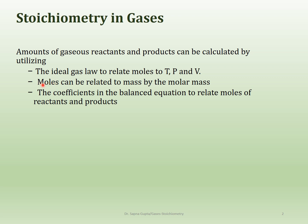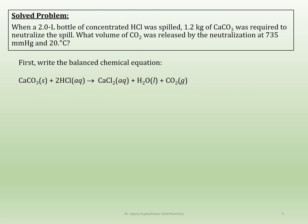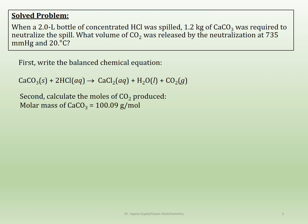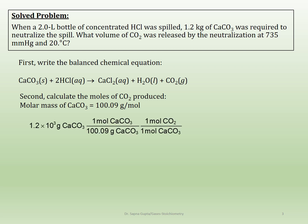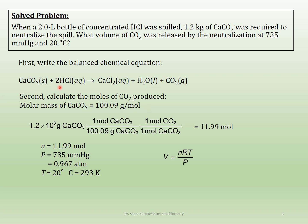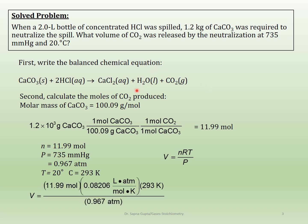Moles can be calculated from molar mass. We also have to have a balanced equation to get the coefficients and the correct mole ratios. For example, when a 2-liter bottle of concentrated HCl was spilled, 1.2 kilograms of calcium carbonate was required to neutralize the spill. What volume of carbon dioxide was released by the neutralization? The equation given is calcium carbonate and HCl giving calcium chloride, and remember from Chapter 4 that carbonic acid will give you water.